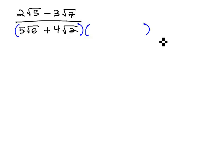The conjugate looks exactly the same with a 5 root 6 and a 4 root 2, but we change the sign in the middle to subtraction. So we multiply 5 root 6 minus 4 root 2 in both the numerator and denominator.